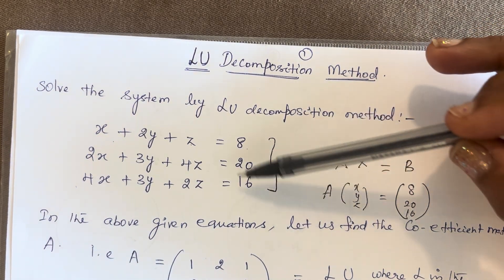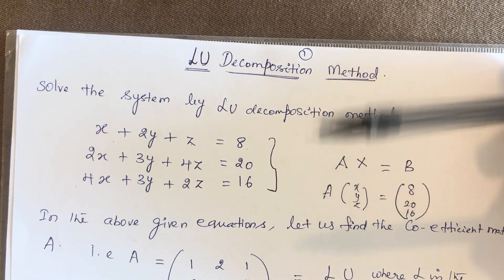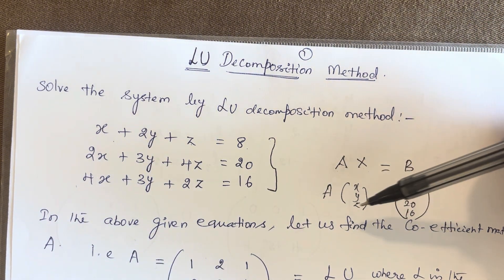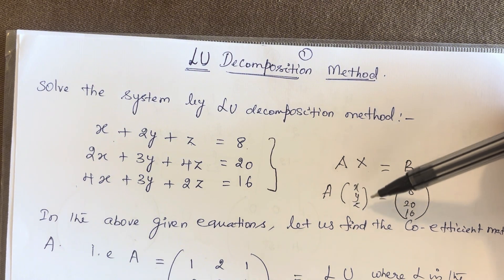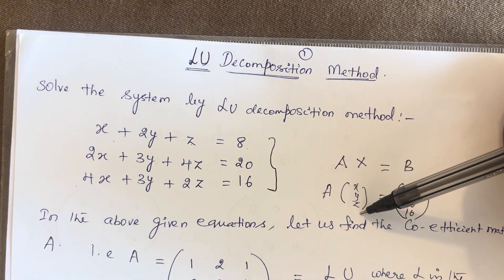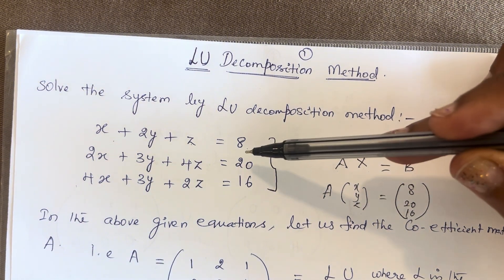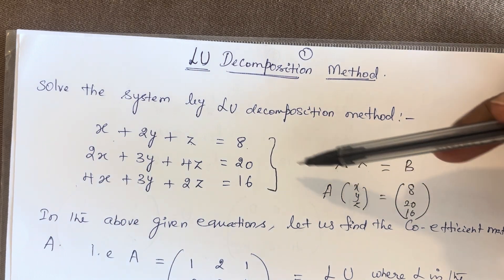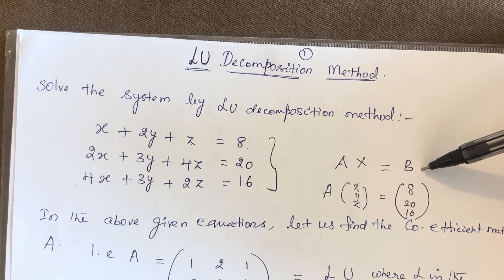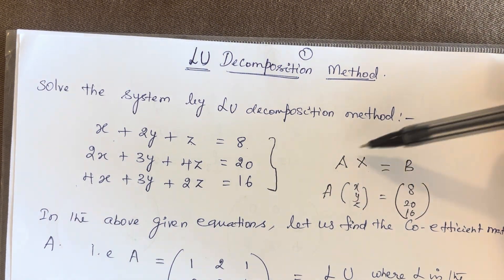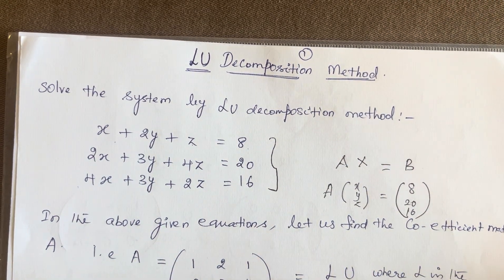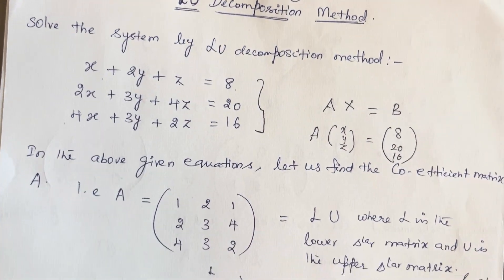The very first step is to put the given three simultaneous equations in matrix form: Ax is equal to b, where A stands for the coefficient matrix, x is the column matrix of unknown variables x, y, z, and b is the column matrix of numerical values 8, 20, 16. So the entire system of equations can be reduced to the form Ax equals b. For this, we need to find out what A is — it is the coefficient matrix from the given equations.